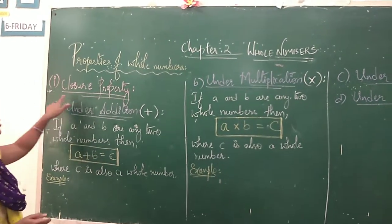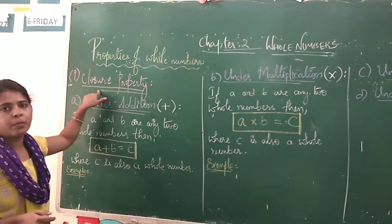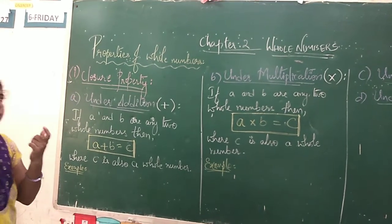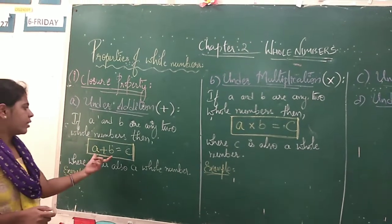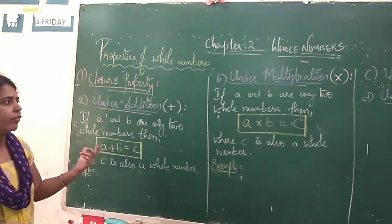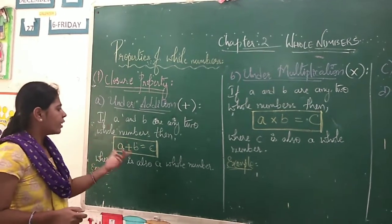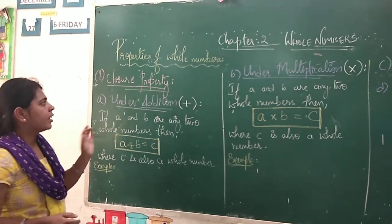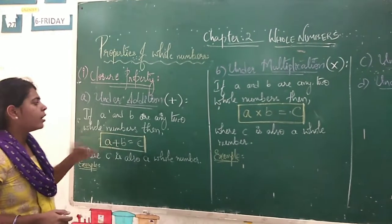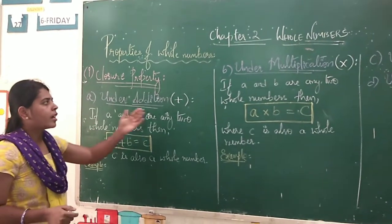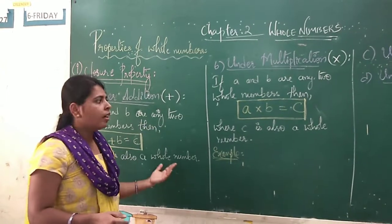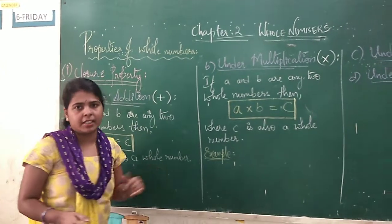First we have the closure property. Closure property means we will have some equations like A plus B equal to C. In this way, we will get an equation. We will see the property, and how these fundamental operations are applied — we will see that in the examples.